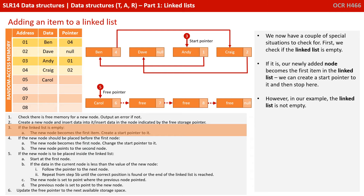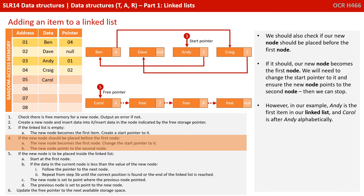We now have a couple of special situations to check for. First, we check if the linked list is empty. If it is, our newly added node becomes the first item in the linked list and we can create a start pointer to it and then stop here. However, in our example, the linked list is not empty. We should also check if our new node should be placed before the first node. If it should, our new node becomes the first node — we will need to change the start pointer to it and ensure the new node points to the second node, and then we can stop. However, in our example, Andy is the first item in our linked list and Carol is after Andy alphabetically.